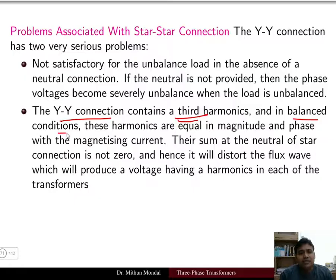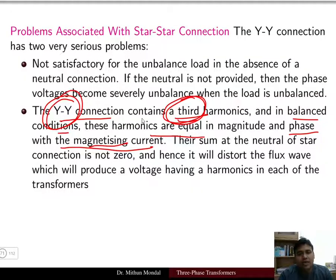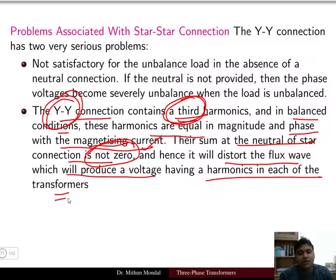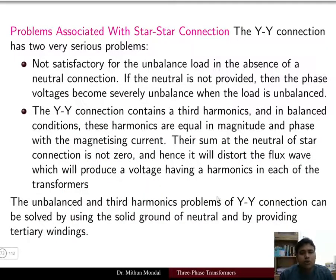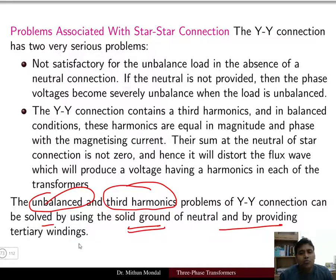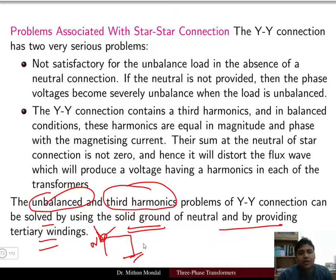Second, the star-star connection contains third harmonics. Under balanced conditions these harmonics are equal in magnitude and phase with the magnetizing current. The sum of the harmonics at the neutral of the star connection is not zero, which distorts the flux wave and produces harmonic voltages in each transformer. These problems can be solved by using a solidly grounded neutral or by providing a tertiary winding, allowing the third-harmonic currents to flow to ground.